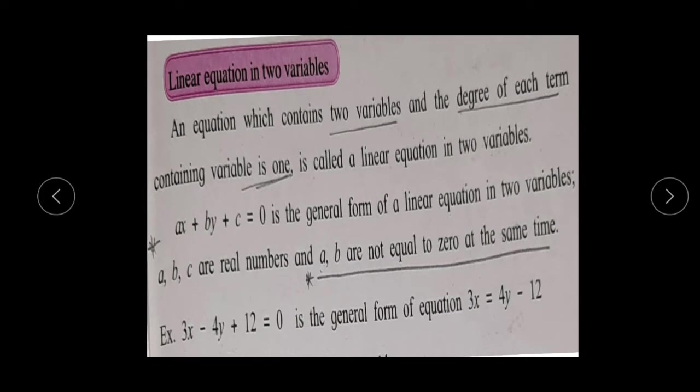Linear Equations in 2 Variables means what? An equation which contains 2 variables and the degree of each term containing the variable is 1 is called a linear equation in 2 variables. The general form of this equation is Ax + By + C = 0, where A, B, and C are real numbers. A and B are not equal to 0 at the same time; either A or B may be 0 at one time.